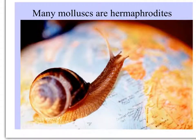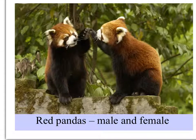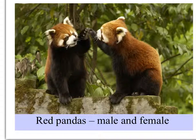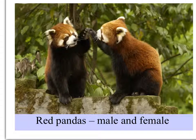Many mollusks — invertebrates — are hermaphroditic. But these red pandas, like most furry mammals, vertebrates, are gonochorous. There's a male and a female in this picture, but in many species males and females look alike except for their genitalia, and in some animals those are hard to see.